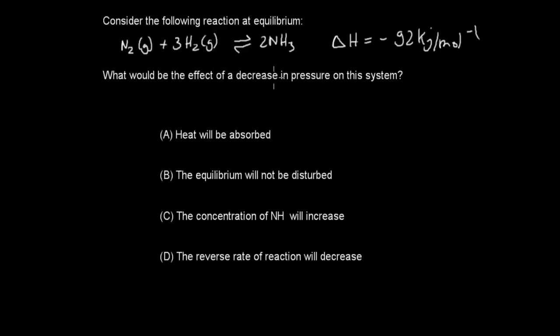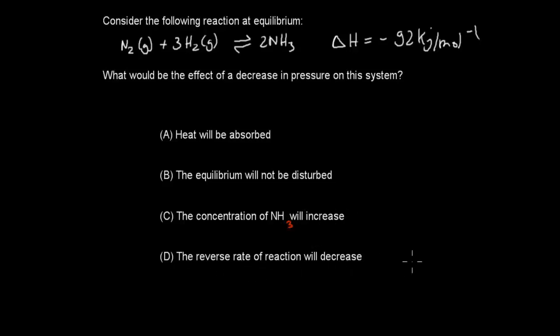Next question: consider the following reaction at equilibrium — N2(g) + 3H2(g) ⇌ 2NH3(g), with a given ΔH. What would be the effect of a decrease in pressure on the system? A, heat will be absorbed. B, the equilibrium will not be disturbed. C, the concentration of NH3 will increase. D, the reverse rate of reaction will decrease.